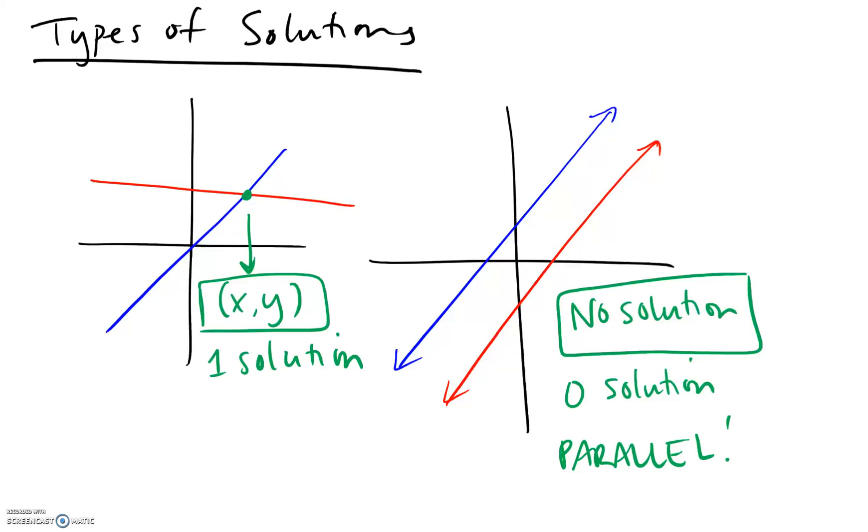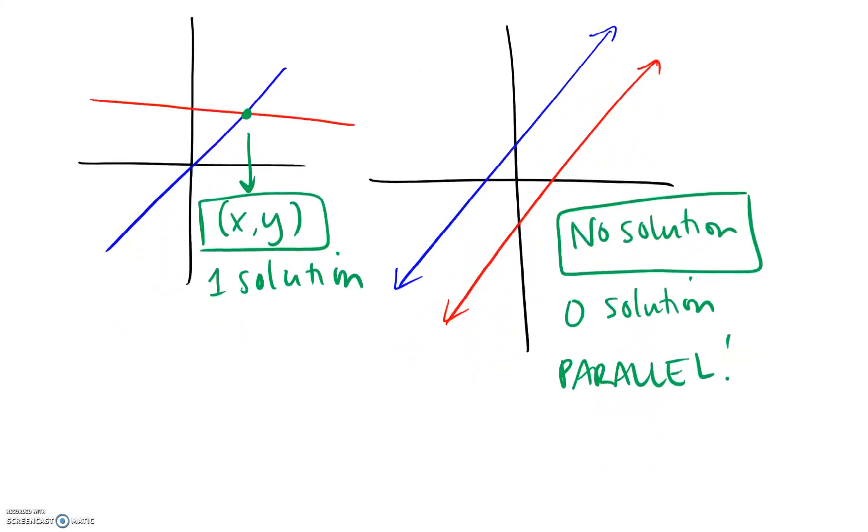Now the last and most tricky situation is when you go to graph your two lines and it turns out the two lines are the exact same thing. So you graph your first line, maybe given to you in standard form. You graph your second line in slope-intercept form. And it turns out they are the exact same line. You just graphed the same line twice. This means that any solution to the first line is also a solution to the second line because they are the same line. So what you end up with is infinite solutions.